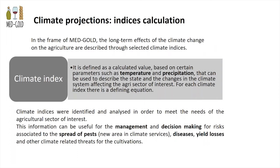As Andrea mentioned, we can use specific climate indices designed for the agricultural sector of interest. These can be based just on temperature and precipitation, but they can also feed impact models. Simple climate indices based on temperature and precipitation can be useful to the agricultural sectors of interest — whether olive, durum wheat, or grape wine — and they can be useful for management and decision-making for risks associated with the spread of pests, diseases, losses of yield, or other climate-related threats for cultivations.